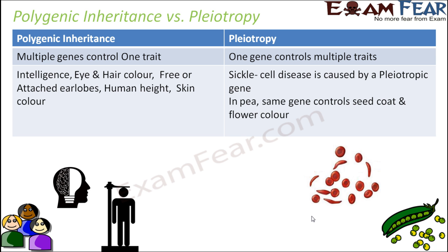Now that we have discussed pleiotropy, let us quickly see how polygenic inheritance is different from pleiotropy — they are exactly the opposite. In polygenic inheritance, multiple genes control one trait. In pleiotropy, one gene controls multiple traits. Traits like intelligence, eye color, hair color, free or attached ear lobes, human height, and skin color are each dependent on multiple genes — that is polygenic. Whereas in pleiotropy, there is just one gene responsible for multiple traits — like the single defective HBB gene in sickle cell disease causing multiple effects such as organ damage, abnormal blood pressure, and vision loss. Similarly in garden pea, seed coat color and flower color both depend on the same gene. Please do not get confused — they are just the opposite things.